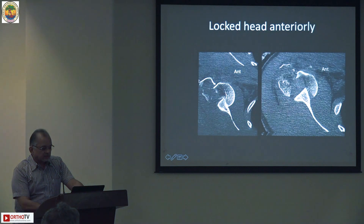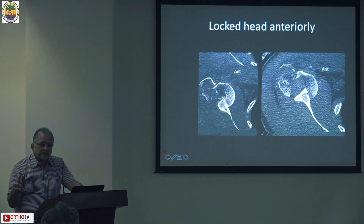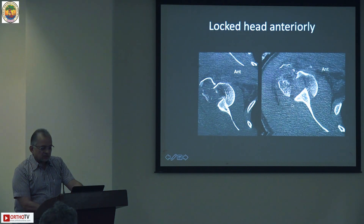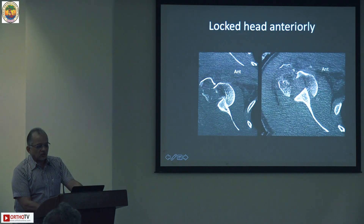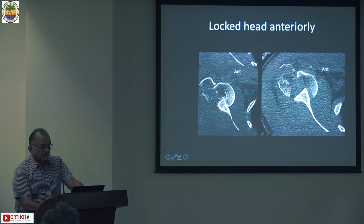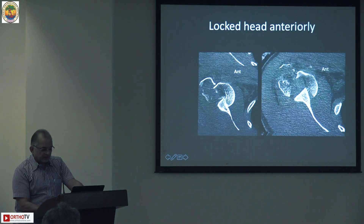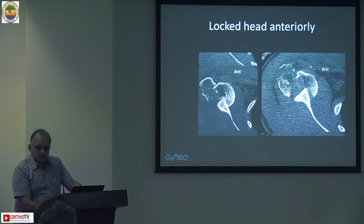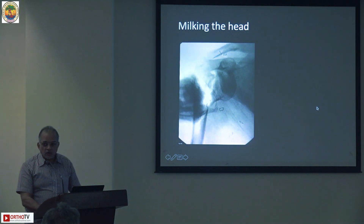Apart from that, you can also see the coracoid process is fractured and there is a separate greater tuberosity fracture. This is an anteriorly locked humeral head - this is the anterior side, this is the posterior side, the glenoid - and the humeral head is locked. The fracture is through the lesser tuberosity; the bicipital groove is nearby, and the lesser tuberosity is very often attached to the small humeral head fragment which is locked anteriorly.